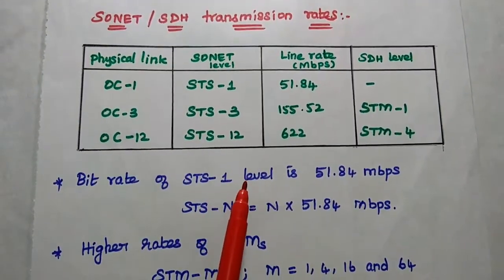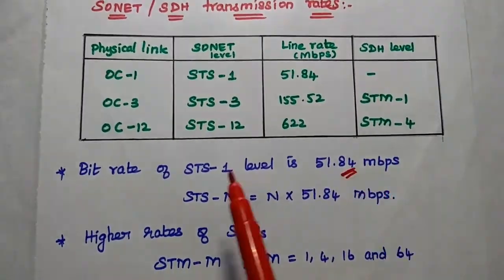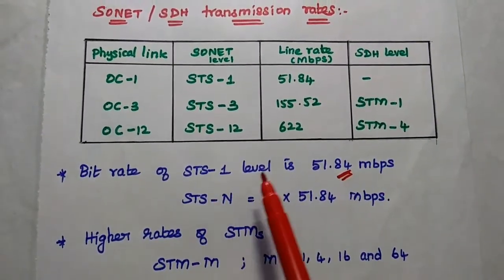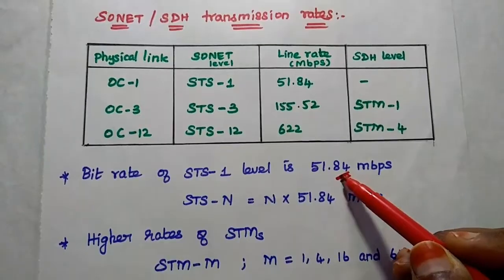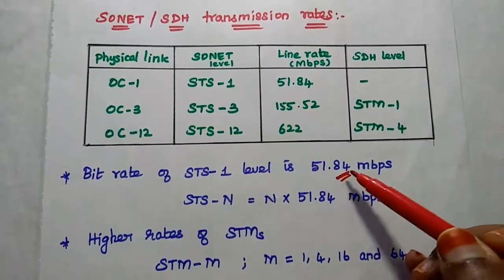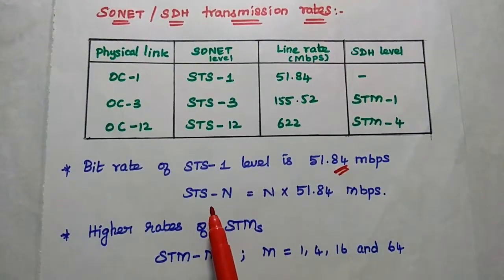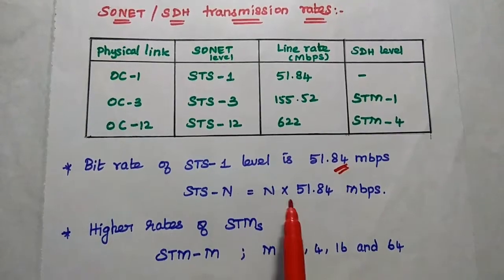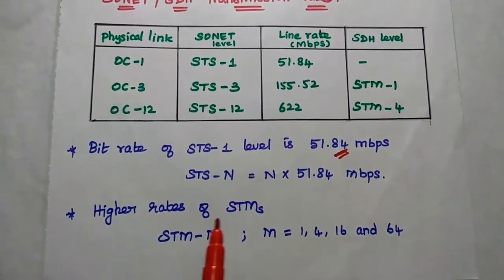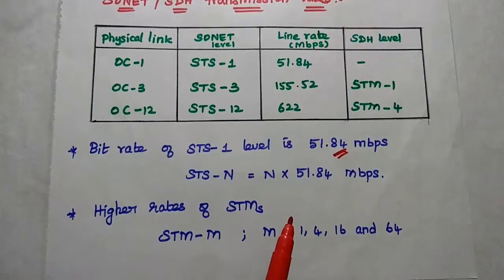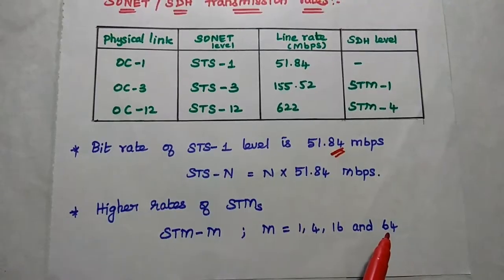The bit rate of STS-1, the fundamental level, is 51.84 Mbps. For an N-level, STS-N equals N × 51.84 Mbps. Similarly, we can get the higher rates for STM in SDH: STM-M where M is 1, 4, 16, and 64.